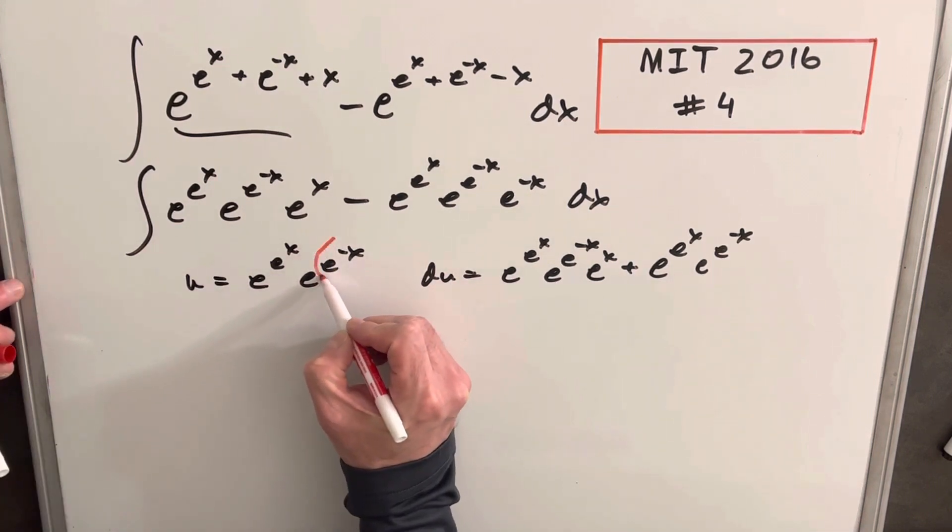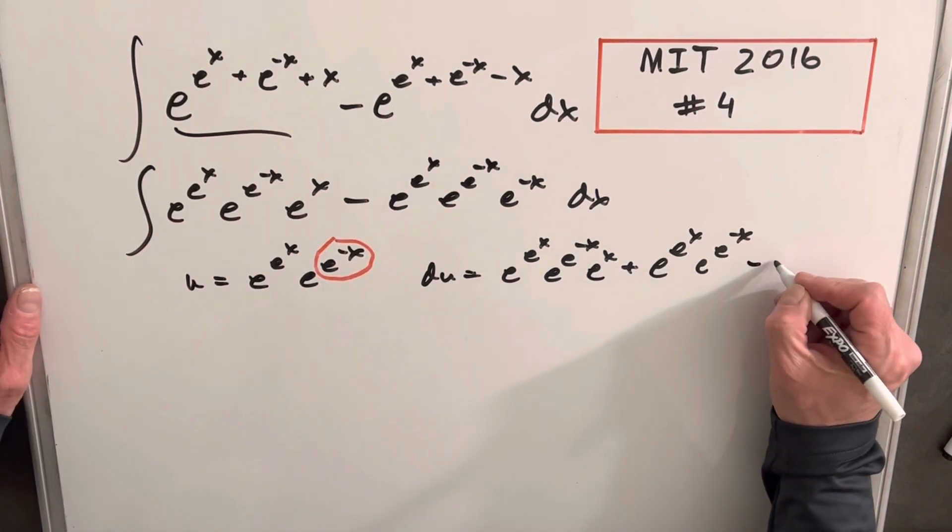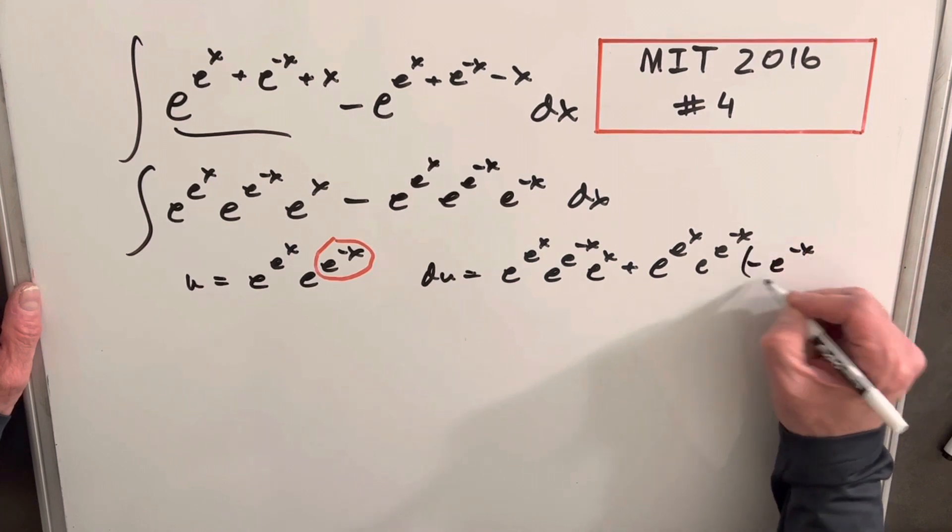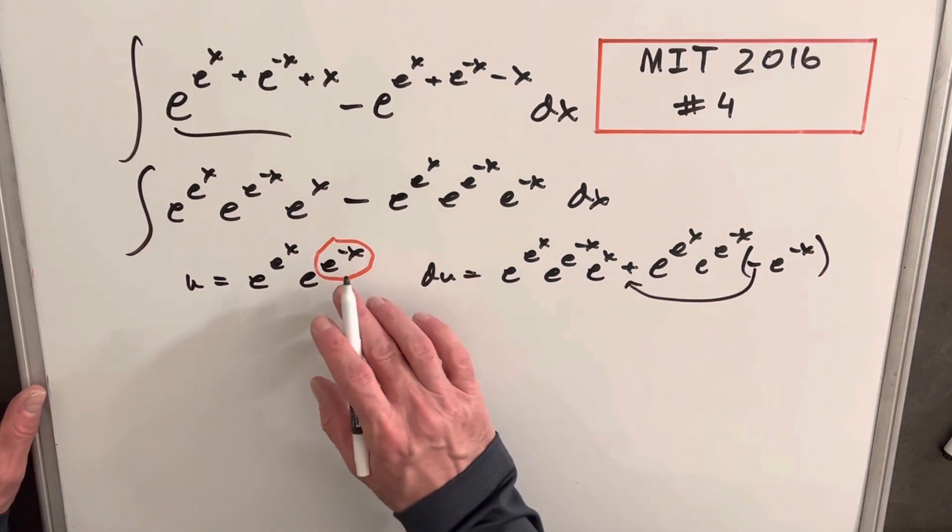And that's going to be a minus e to the minus x. And then what you notice is we just take this minus and bring it here. We have our whole expression exactly.